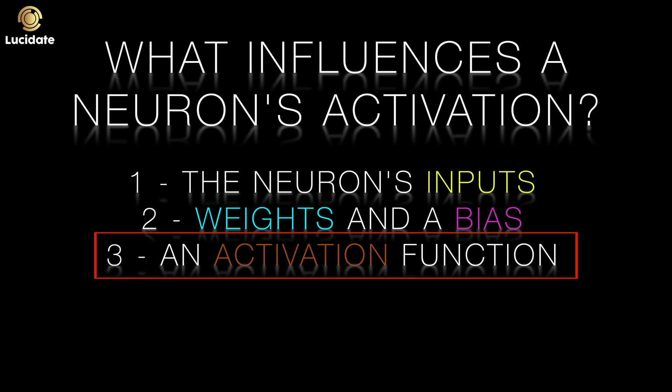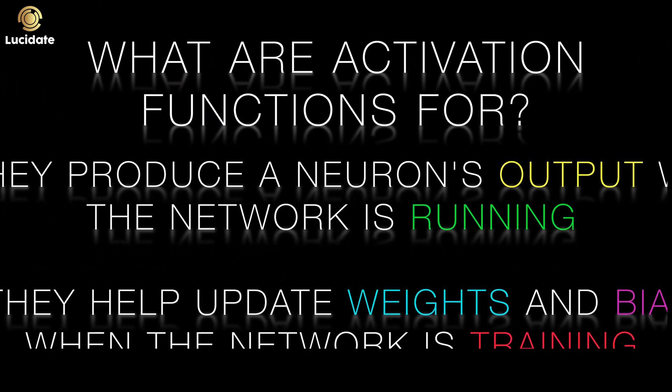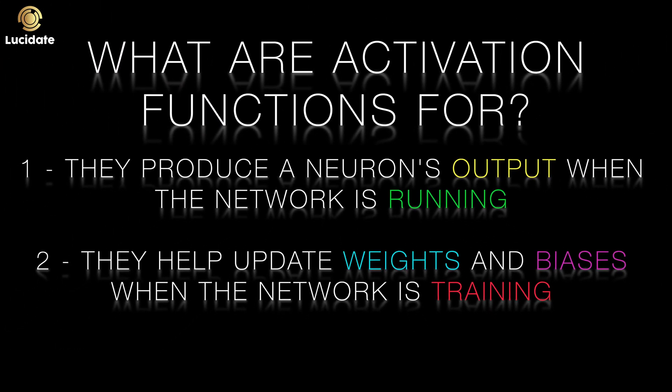In this video we will take a closer look at activation functions. Activation functions perform two vital roles in neural networks. As we have seen, they play a part in producing the output of a neuron. But as we shall see in parts 4 and 5 of this blog series, they also play a vital role in training a neural network.